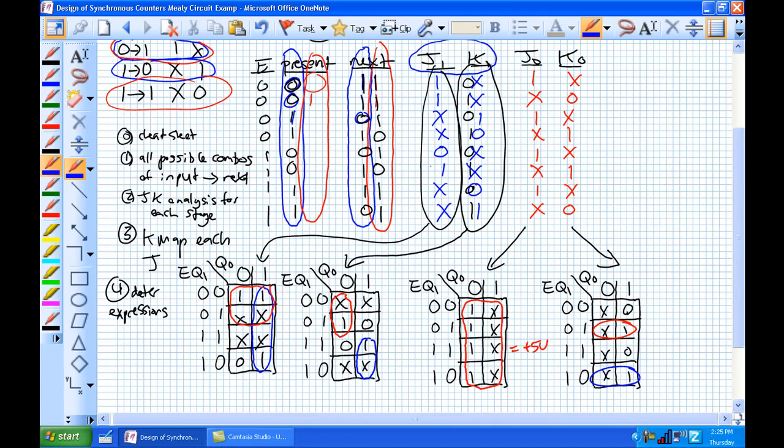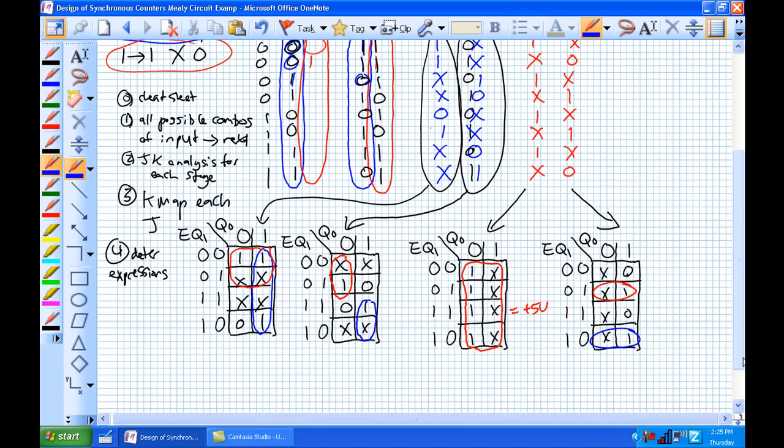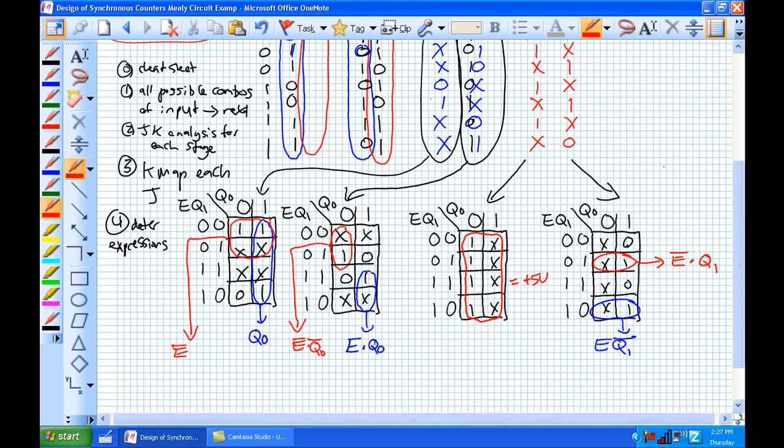So now part of that determining our expressions is basically determine what each one of those groups represent. And this is a good K-map practice. And if you've done it correctly, you should look like this, where our J1 expression looks like it's got our final expression for that J1 is not E or Q0. Final expression for K1, not E, and not Q, or E and not Q. Expression for J0, real easy. So it's a 1 or plus 5 volts for TTL logic.